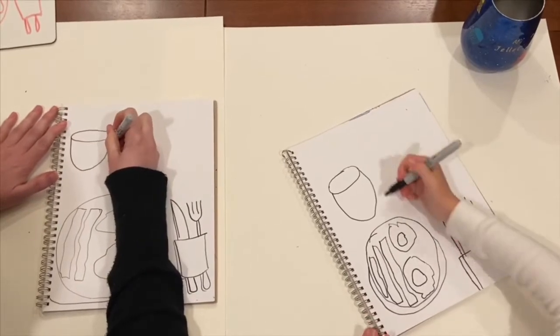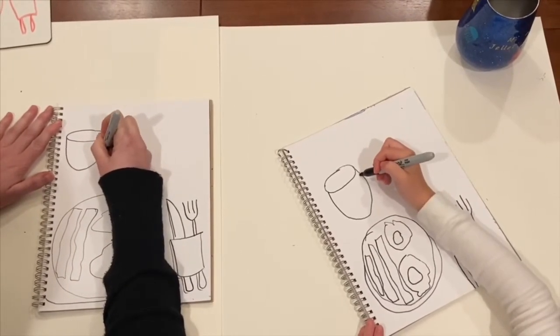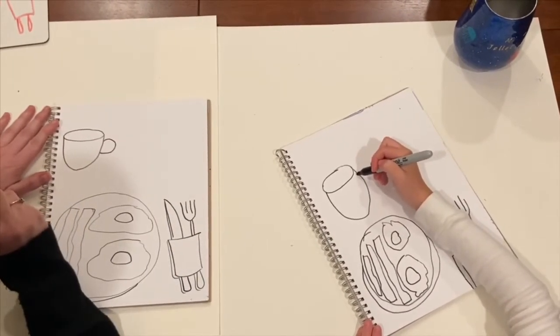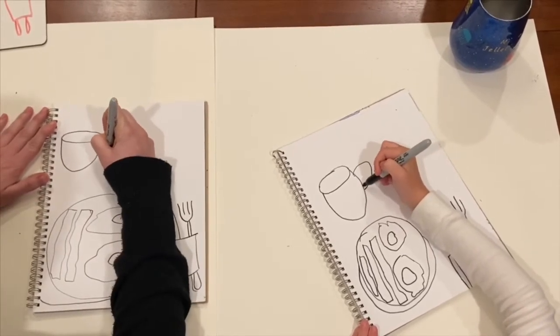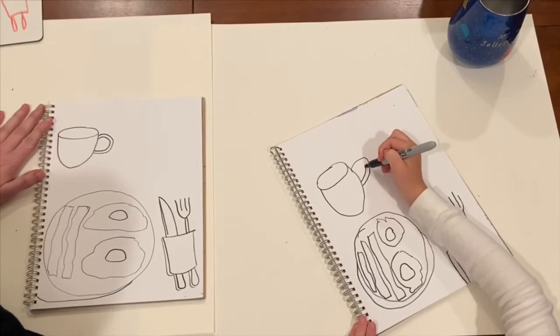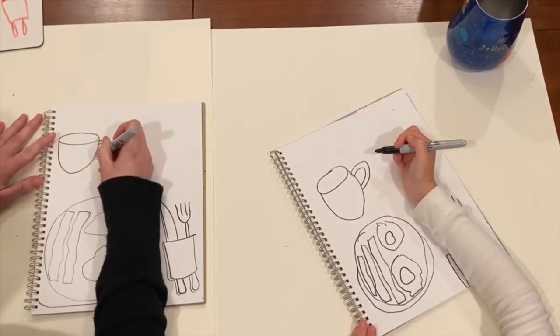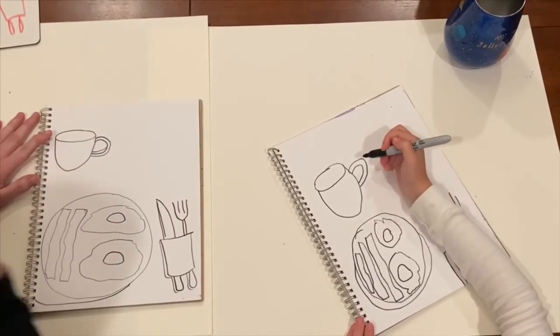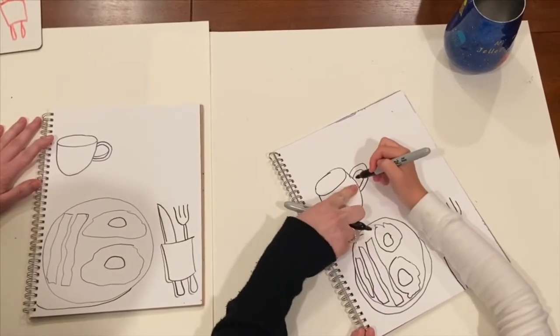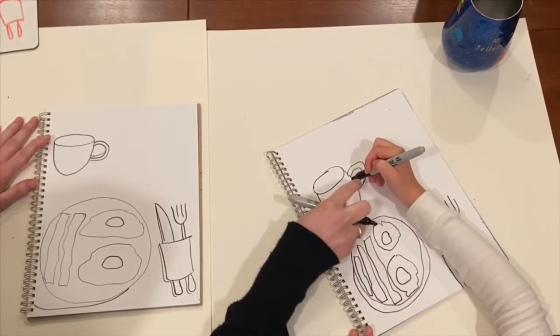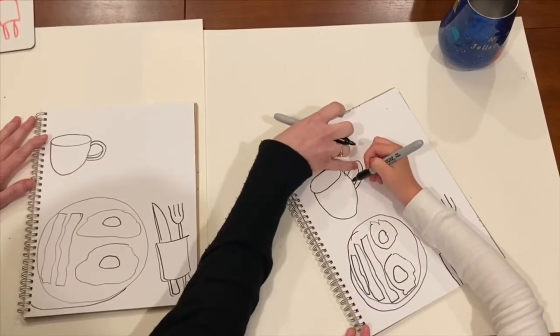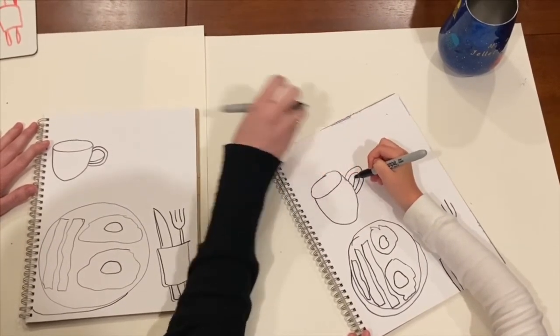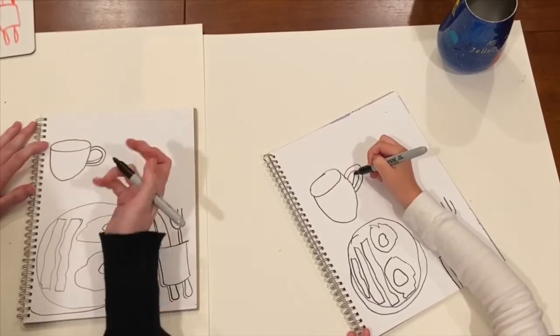Then a handle. My handle is going to look like a backward C. I'm going to do a second line to make it have dimension, to make it a little thicker. And then I'm going to do a third line just on the bottom to make it a little thicker looking. Follow the line right there. So it makes it look a little more 3D.